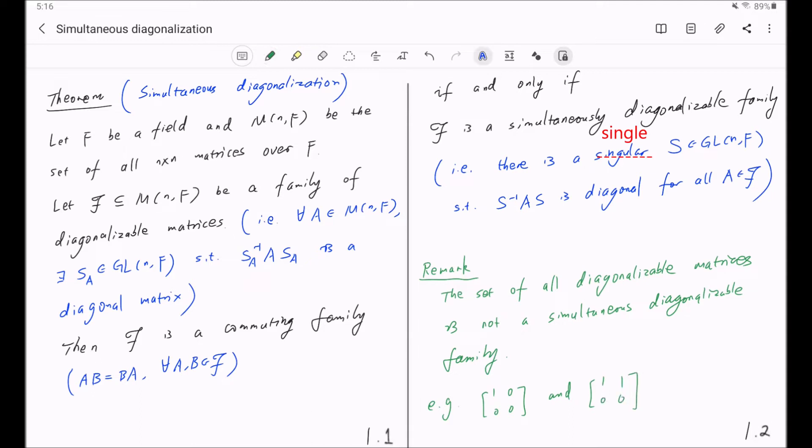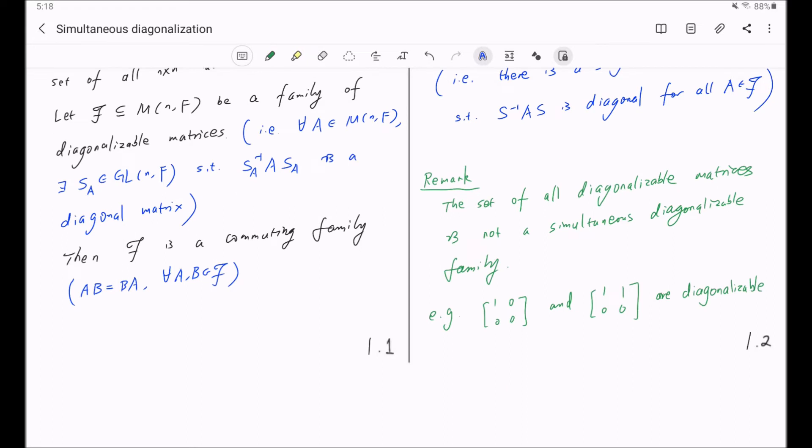You just look at these two matrices. They are both diagonalizable. The first one is already a diagonal matrix, so it is trivially diagonalizable. The second one is diagonalizable because it has two distinct eigenvalues, 1 and 0. Or you can check this guy is diagonalizable in a brutal way.